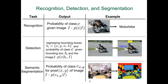A more complicated problem is detection: you not only want to say what is in the image, but also where it is. This requires predicting the class C and also predicting the bounding box — the location of the motorbike. Two things need to be estimated: the bounding box location and also the size — the width, height, and aspect ratio. At the beginning the search space is essentially infinite, as you don't know what you're looking at.